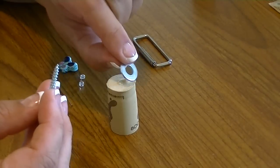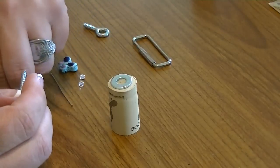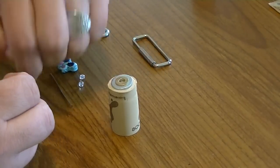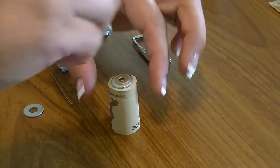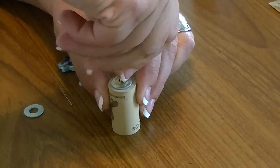You're going to take one of your washers, the larger washer, and stick it on there. And then you'll take your other colored smaller washer and stick it on top. And then you're just going to start screwing into the cork with your bolt.